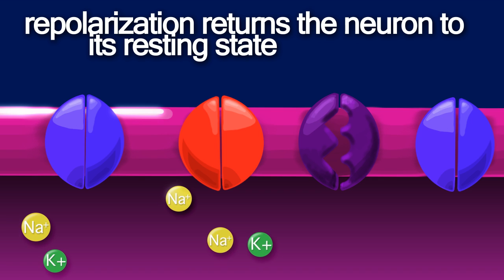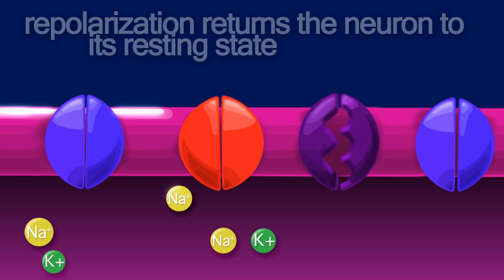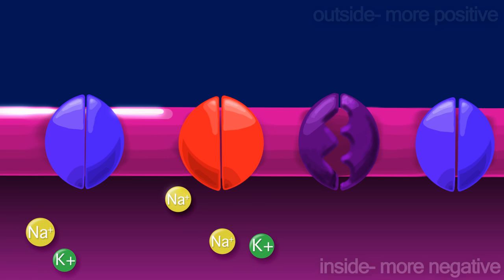Repolarization resets the cell to its original polarized state. The membrane's permeability changes again, allowing potassium to diffuse out of the cell.